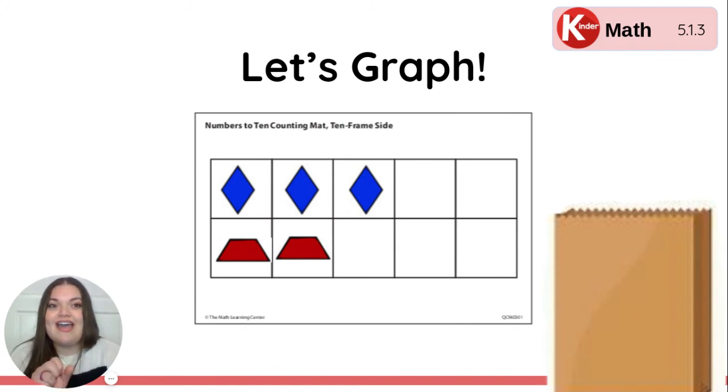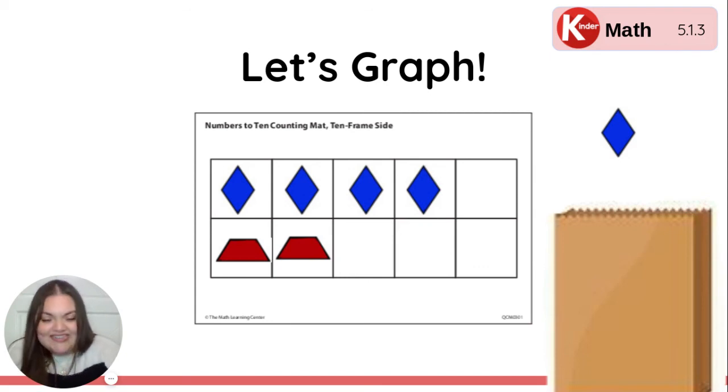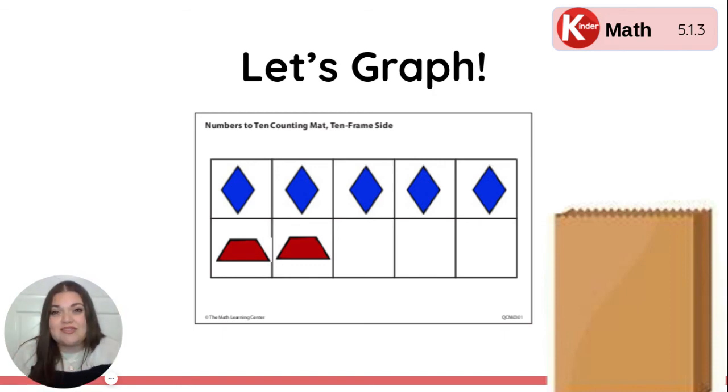Our next shape is a... What is it? Uh-huh. A rhombus. Where will this rhombus go? See if you can move it before I move it. It's another rhombus in the fourth spot on our graph. It's staying on the top row because it's another rhombus. Our next shape is... Oh, wow! Another rhombus. See if you can move it before I move it. That's it. That rhombus will fill up the entire top row of our numbers to 10 counting mat. I remember that this counting mat counts to 10. So I also remember that the top row only has enough space for five shapes. So how many rhombuses did we pull out of the bag? We pulled out five. Very good.